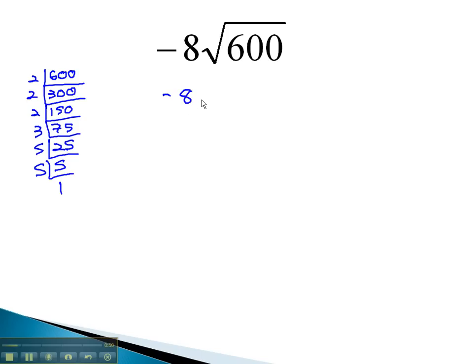We now have negative 8 times the square root of 2 to the 3rd power, times 3, times 5 to the 2nd power. With square root, the index is 2, and so we will divide the exponent by 2 to decide how many come out. 3 divided by 2 tells us that 1, 2 comes out. But there is a remainder of 1, which means 1, 2 will remain in the radical.